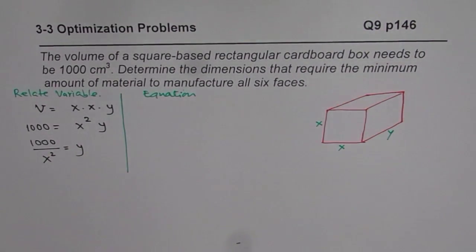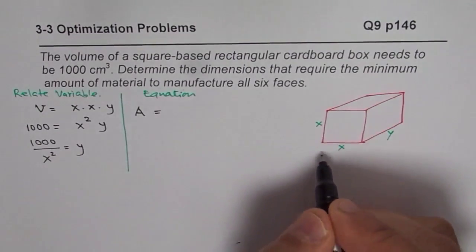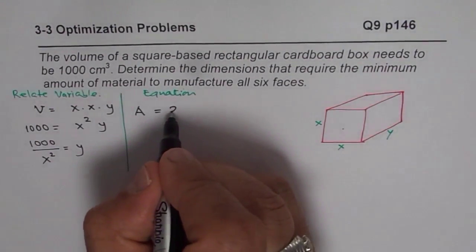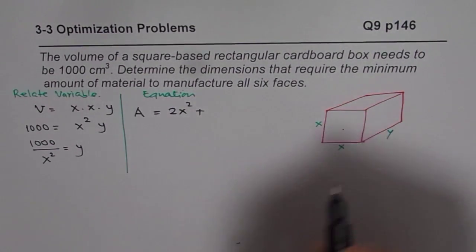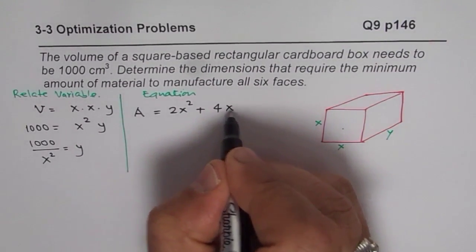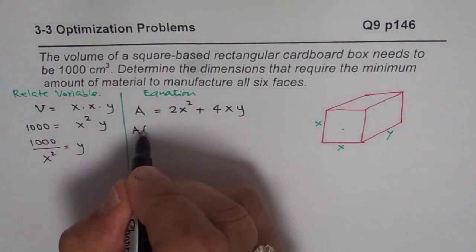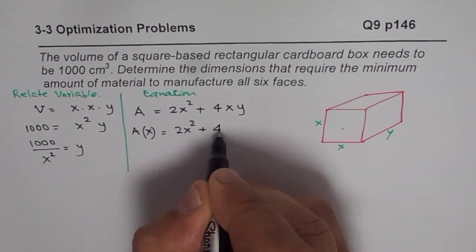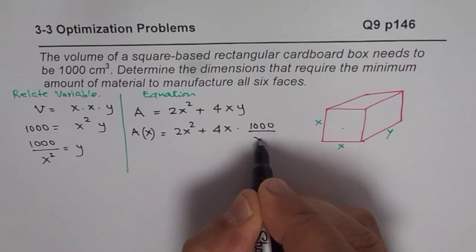Now, what do we need to minimize? That is the surface area. So we will say surface area A for this particular box will be, there are two surfaces which are square, so 2 times x² plus 4 surfaces which have area of x times y each, so 4 times xy. So that becomes total of six surfaces. Now we know what y is.